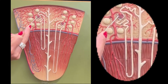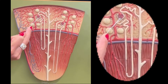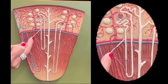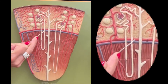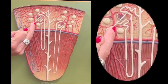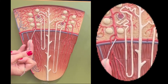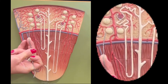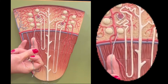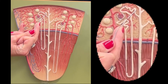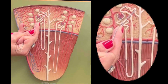The renal corpuscle, the proximal convoluted tubule, the descending limb, the ascending limb, and the distal convoluted tubule together make up a nephron, which is the filtration unit of our kidneys. After the distal convoluted tubule, we don't have a nephron anymore — that's part of the collecting system.